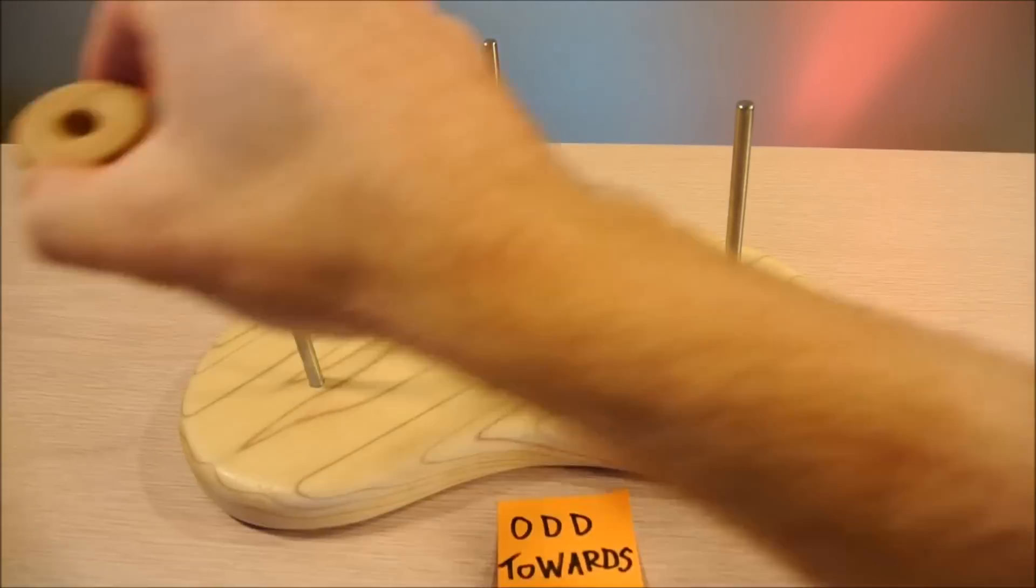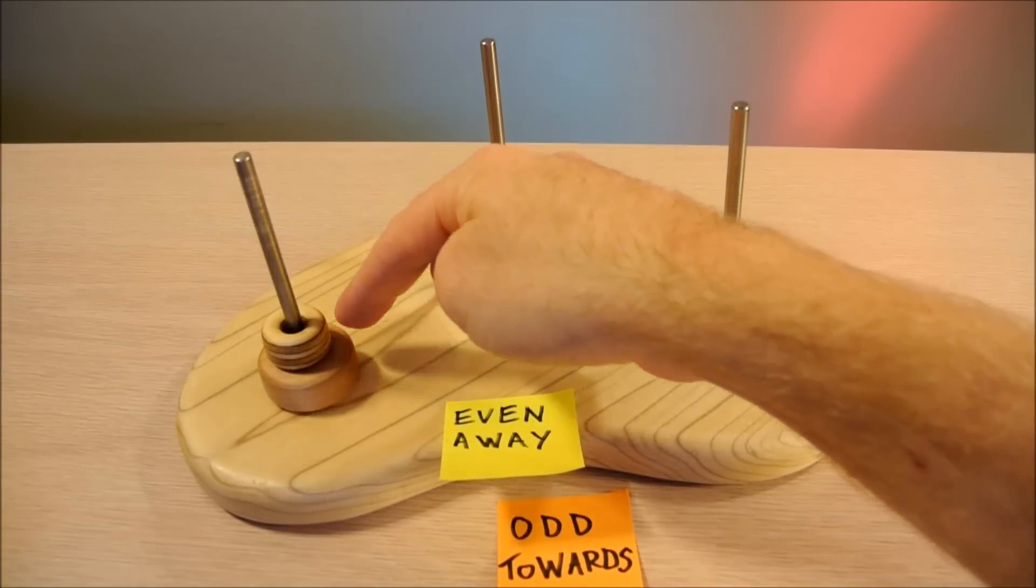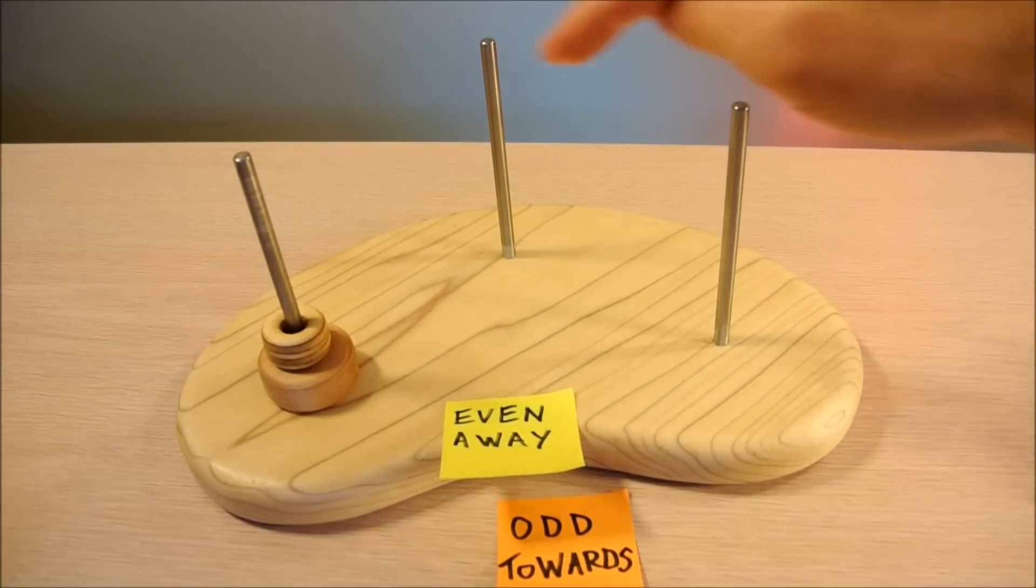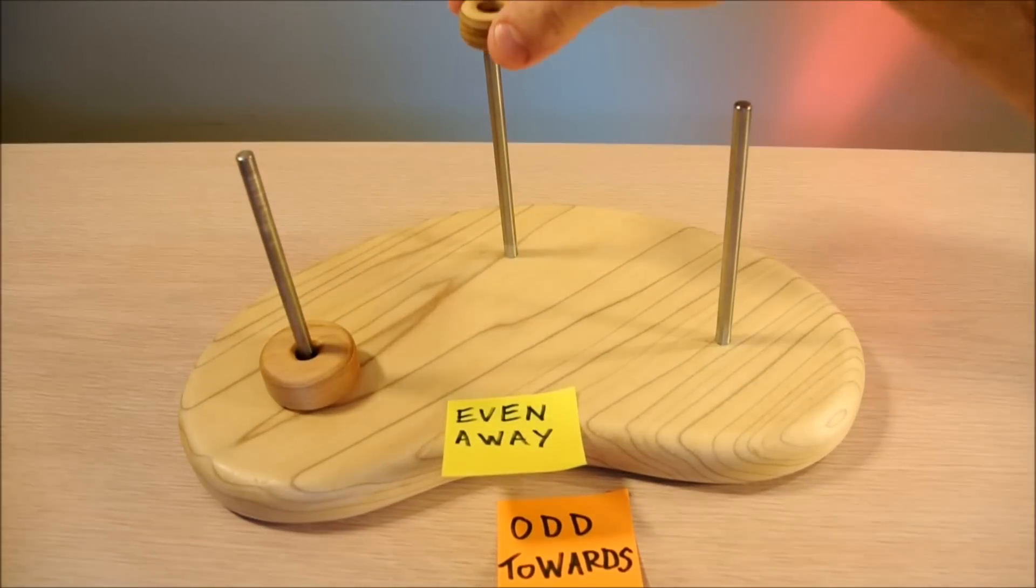Now if we have two pieces the rule is even away. An even number of pieces, this is the goal, this is the start. The first move is away from the goal.